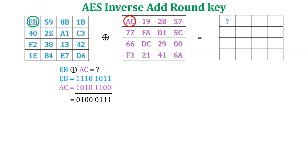Now convert this resultant binary value into hexadecimal format — it is 47. So our first element is 47. Now find the next element of the new state array.